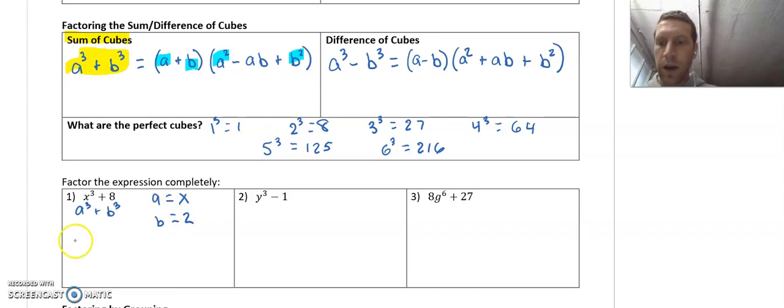So once you know your a and b values, then it's really just plugging them in and being careful with your math. This is going to be factored like this: First, I have a plus b, which would be x plus 2. And then after that, I have a squared, so that would be x squared, minus a times b, so minus 2x, plus b squared, so plus 4.